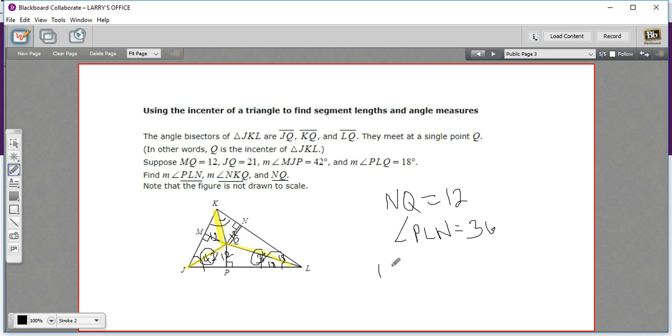So we would take 180 minus 36 plus 42 is 78. So that is going to be 102 that's left over for this one. And if we split that in half, we get 51. So angle NKQ is 51 degrees.